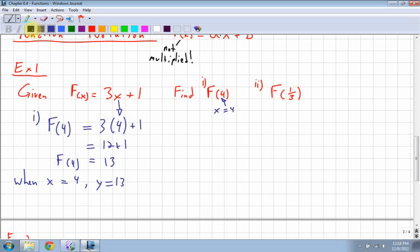That means that when my x value is equal to 4, my f of value, or my y value, is going to be equal to 13. Right? So in terms of a graph, when my x value is equal to 1, 2, 3, 4, my y value is going to be up at 13. That's a point on my graph.